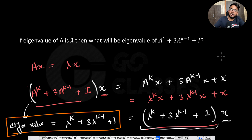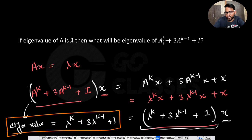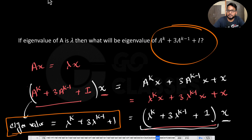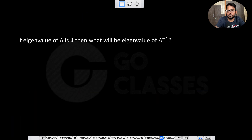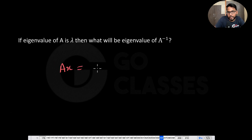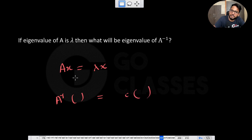From these examples, you can draw a pattern: if you have a polynomial equation in A, just plug in the eigenvalue λ of A, and you get the eigenvalue of that whole matrix expression. Earlier, for A^k, you just plug in λ and get λ^k as the eigenvalue of A^k.